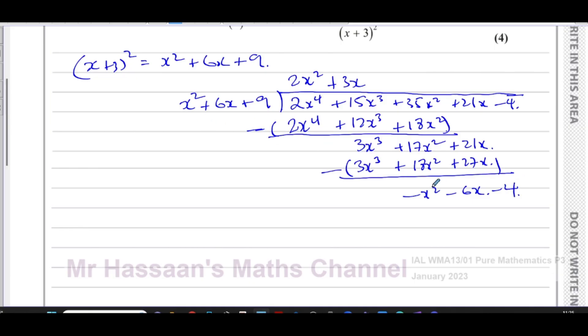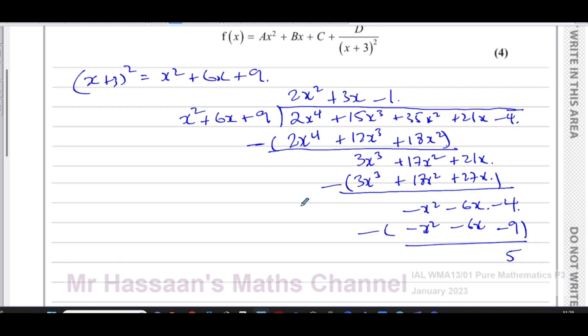Then I say x squared goes into negative x squared minus 1 time. I have minus 1 times x squared which is minus x squared, minus 1 times 6x which is minus 6x, and minus 1 times 9 which is minus 9. Then I subtract these and this becomes 0, 0, and minus 4 plus 9 which is 5. So this is the remainder and this is the quotient.